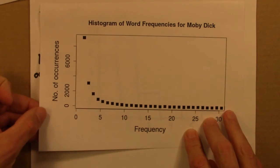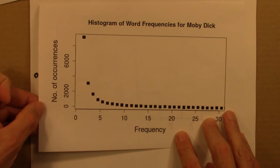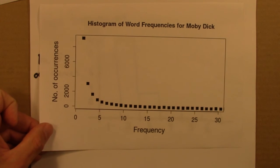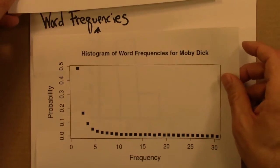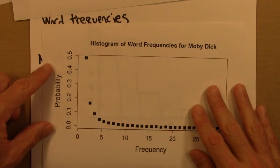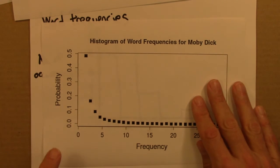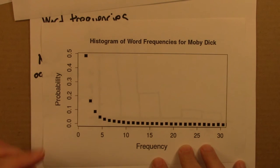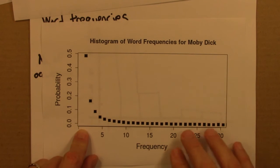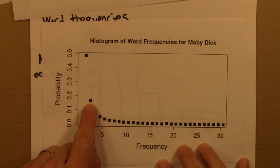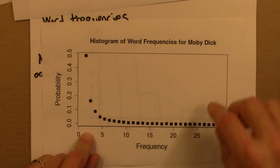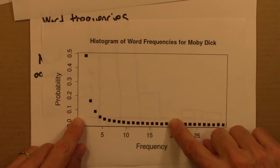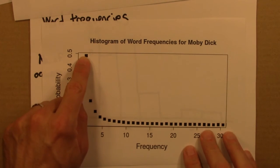When you make a histogram, you can count the number of occurrences, or you can also think in terms of probability. Here's the same data, and all I've done is plotted the y-axis in terms of probability. Of the 18,000 or so unique words in Moby Dick, almost half of them appear only once — I think that's surprising and really interesting. About 18% of these words appear only twice. So we're seeing something that drops off very quickly with a really big peak at the small value of 1.